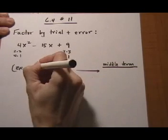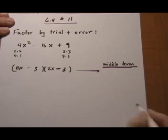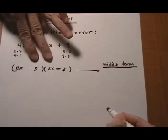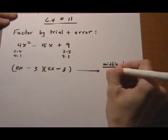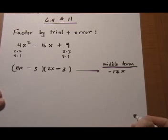And then let's just start with the 3 and see what happens. 3 times 3. Middle term minus 6 minus 6 is minus 12x. That's not what we're looking for. We're looking for minus 15. So we keep going.